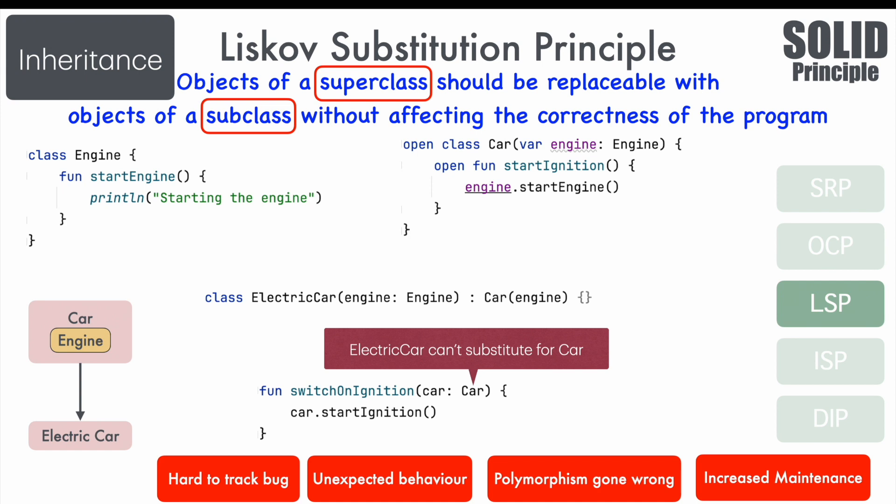In this case we were not directly dealing with an IS-A relationship but a HAS-A relationship, and here also we saw that an improperly thought-out class hierarchy can create havoc with the way behavior gets affected later. The examples we have seen so far are very generic in nature, so let's go through an Android-specific example.